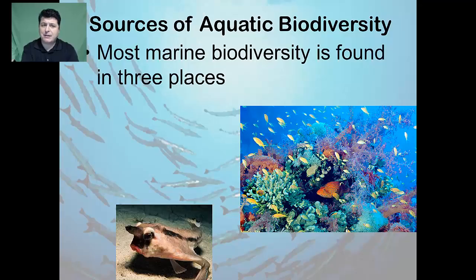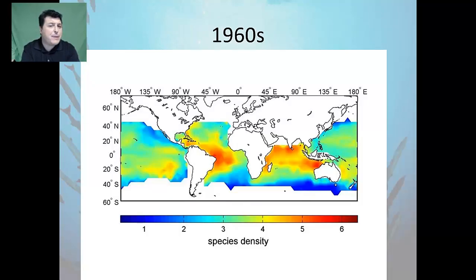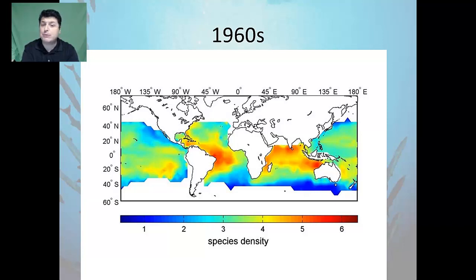Most of our marine biodiversity will be found in three places: at coral reefs, near coastlines, and at the ocean bottom. People have been catching fish from the oceans for thousands of years, but it was only recently in the 1950s that anyone started to really keep records of the numbers and types of fish they caught. In 2005, scientists gathered as much of the data as they could and used it to produce global species density maps of the locations of fish populations over time as a way to measure marine biodiversity.